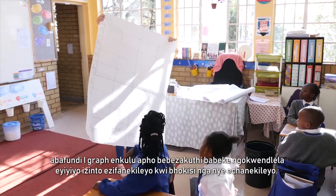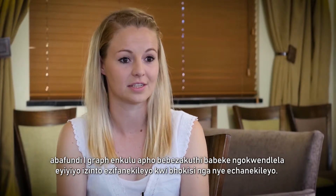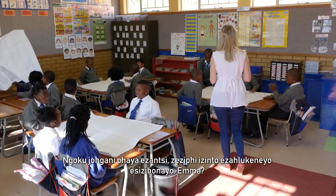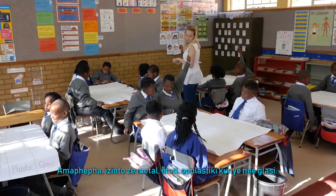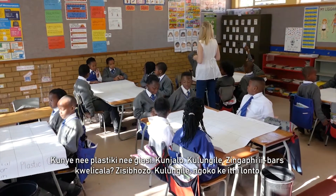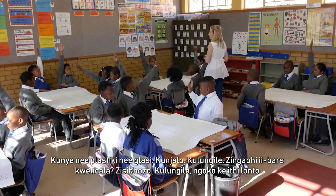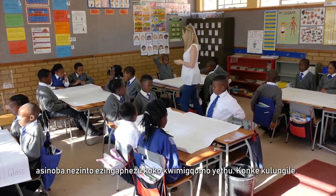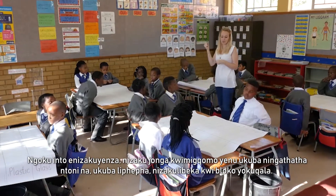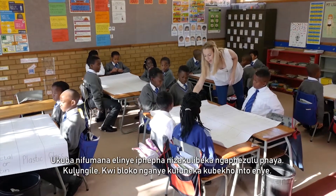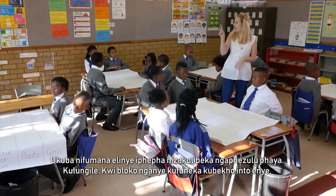I gave the learners a big graph and they had to physically organize the pieces into the correct column. Now you can see at the bottom what different items we are looking for — paper, metal, wooden, plastic and glass. And how many bars are there on the side? Eight. So we shouldn't have more than that in our dustbins. What you're going to do is look in your dustbins. If you pick up something and it's paper, you're going to put it in the first block. If you get another piece of paper, you're going to put it on top. Only one item per block.